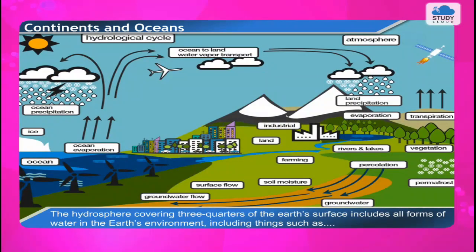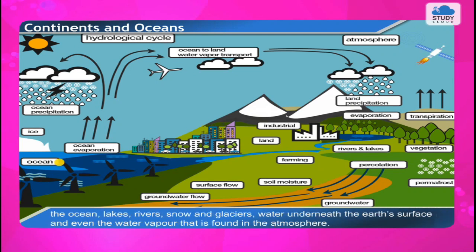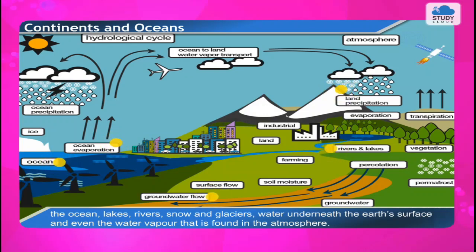The hydrosphere, covering three quarters of the earth's surface, includes all forms of water in the earth's environment, including the ocean, lakes, rivers, snow and glaciers, water underneath the earth's surface, and even the water vapor found in the atmosphere.